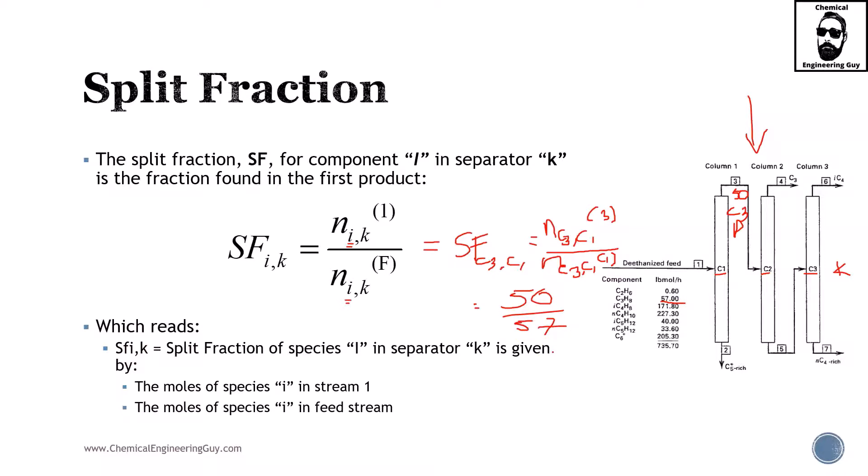I don't have the exact number, but it should be around 95 or 96 percent. That's why split fraction is very powerful: if I give you split fractions throughout the plant or chemical manufacturing process, you'll be able to relate split fractions to total mole flow rates, and mole flow rates to recoveries, purities, compositions, and so on.